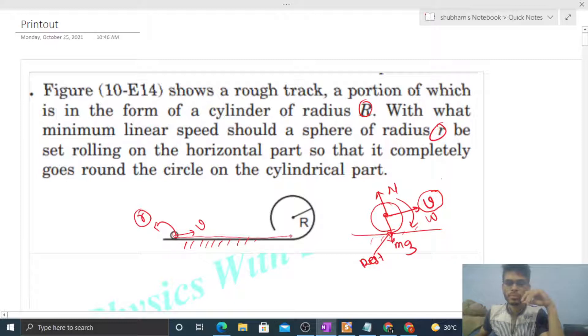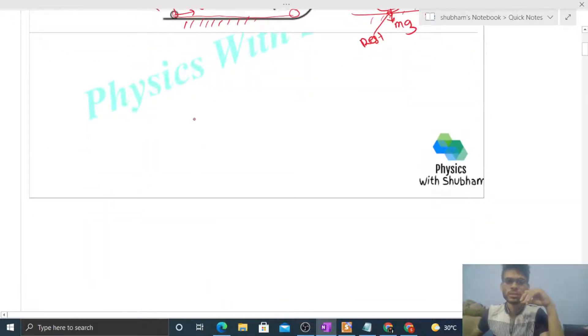So moving this way on the horizontal track, it will reach the bottom of this circle. After that we study this way - after reaching the bottommost point, the center of this sphere will move in a circle, something like this. Can you find out the radius of that circle in which this sphere's center will move? Simple, that will be capital R minus small r.